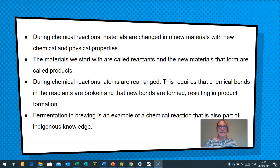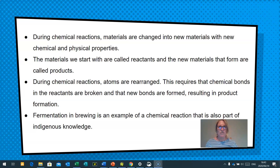The work we're going to look at is: during chemical reactions, materials are changed into new materials with new chemical and physical properties. The materials we start with are called reactants, and the new materials that form are called products. During chemical reactions, atoms are rearranged — this requires chemical bonds in the reactants to be broken and new bonds to form, resulting in product formation. We're also going to look at fermentation and how this is an example of a chemical reaction and part of our indigenous knowledge.